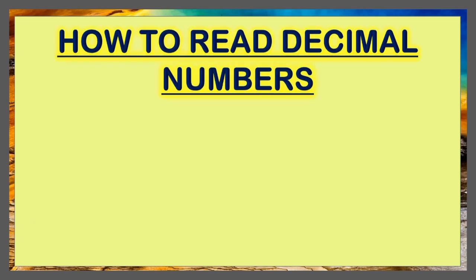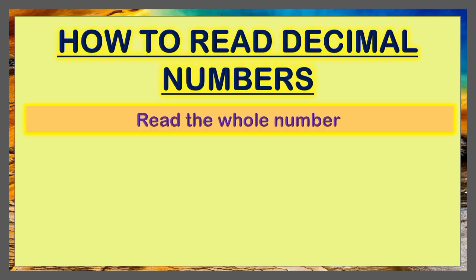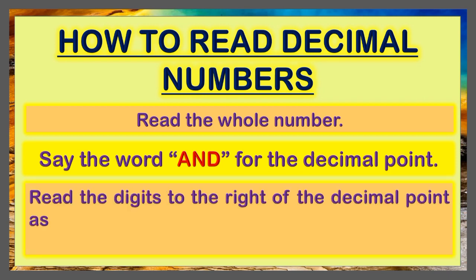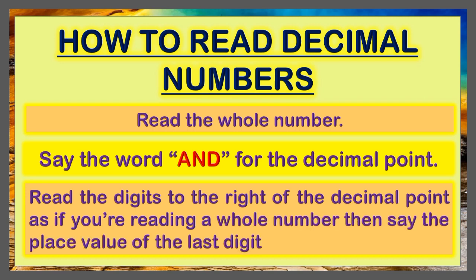Steps on how to read decimal numbers. First, read the whole number. Second, say the word AND for the decimal point. And lastly, read the digits to the right of the decimal point as if you're reading a whole number. Then say the place value of the last digit.